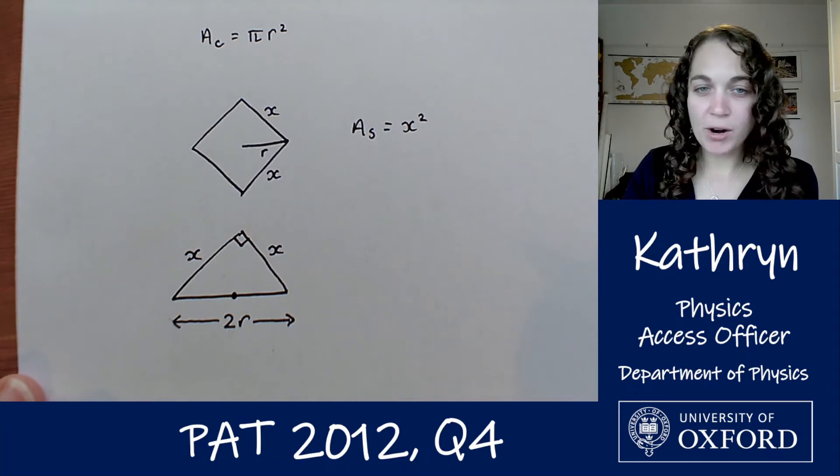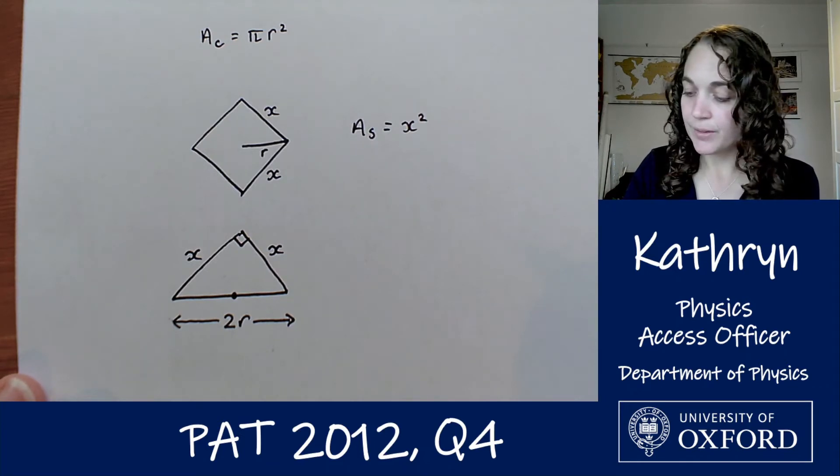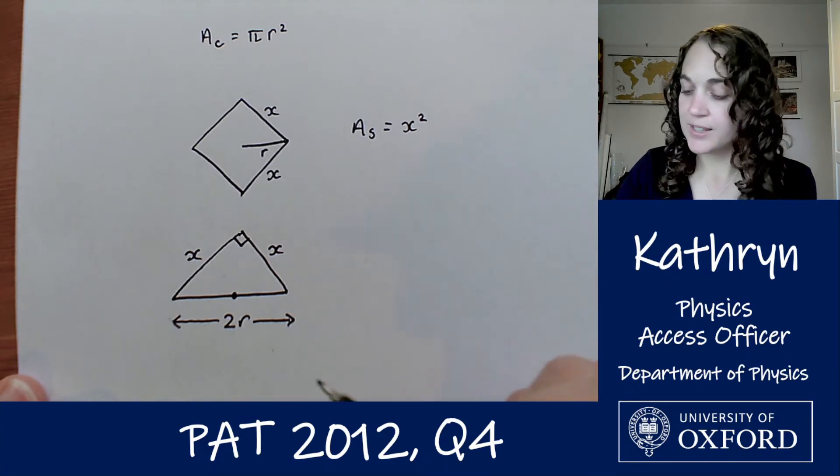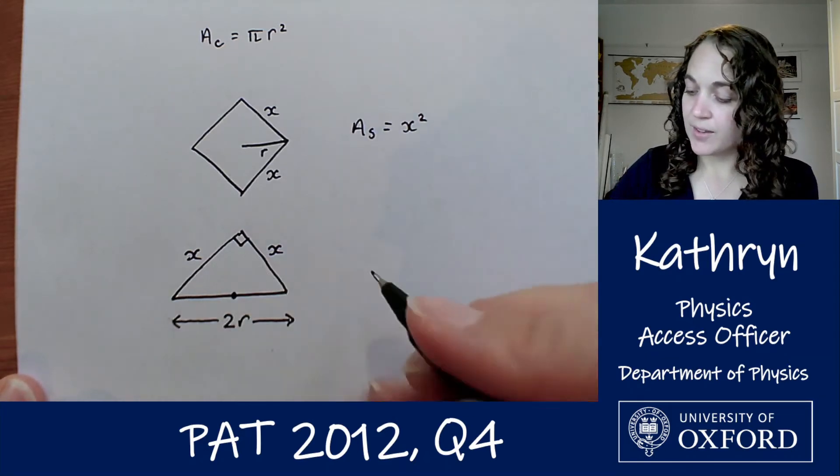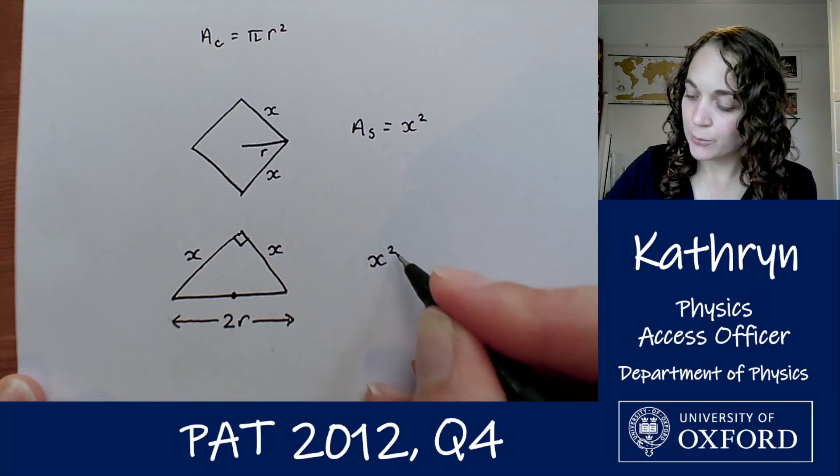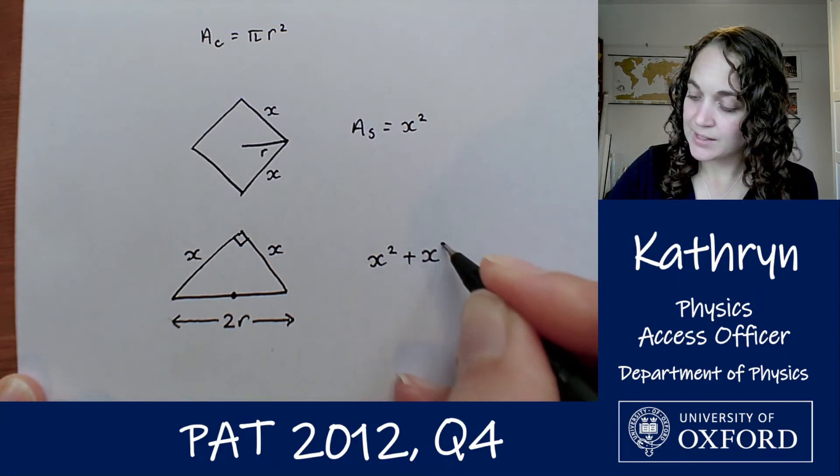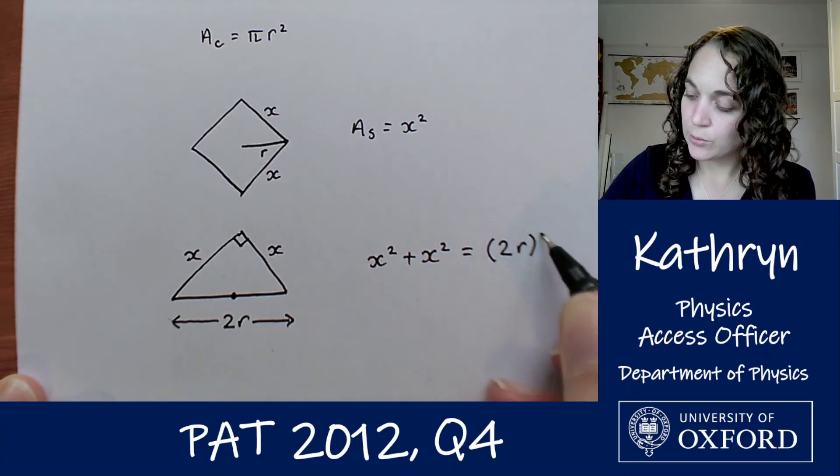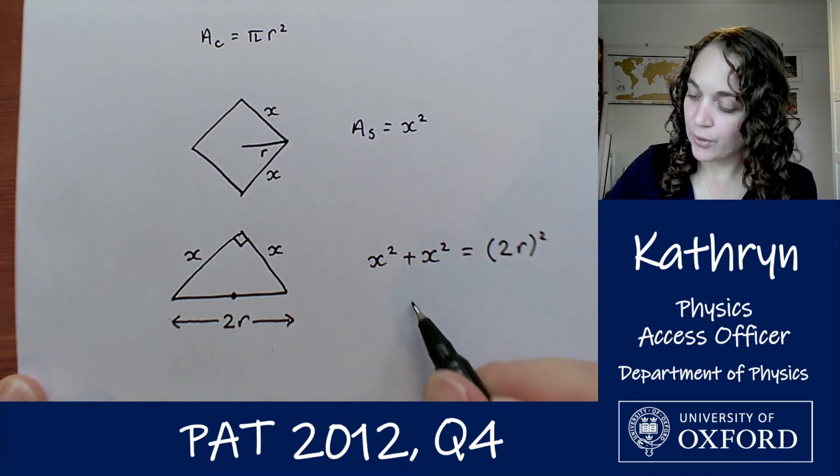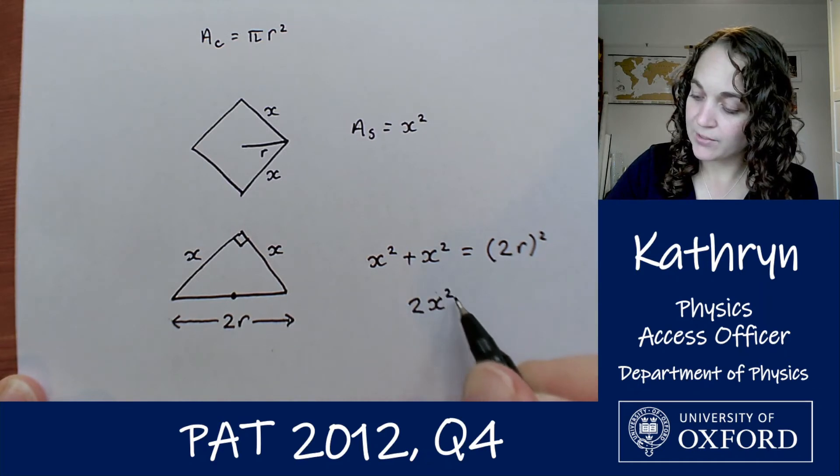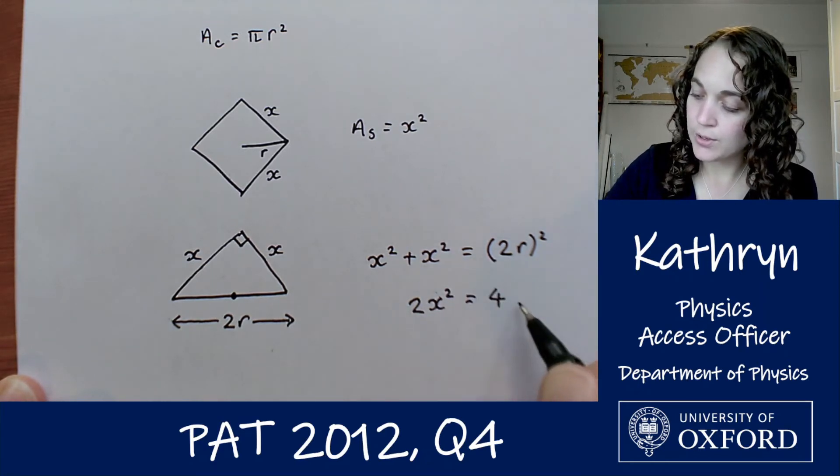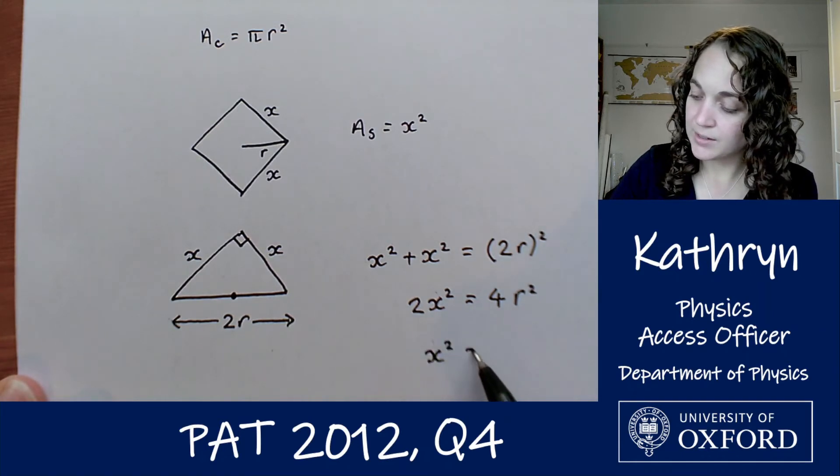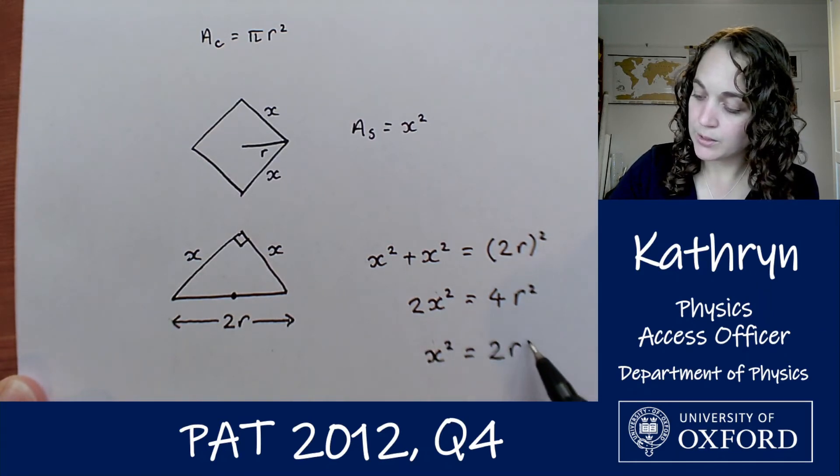So what we've got is a right angle triangle, we can use Pythagoras on it. Pythagoras, a squared plus b squared equals c squared gives us that x squared plus x squared equals this length squared, so that's 2r all squared. So that would be 2x squared equals 4r squared, or x squared equals 2r squared.